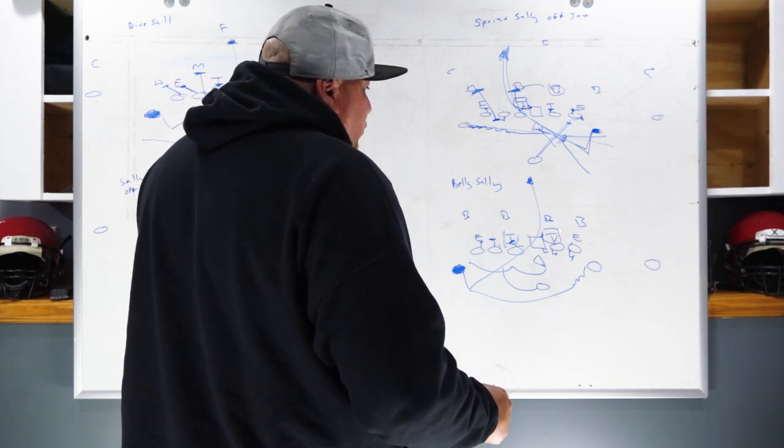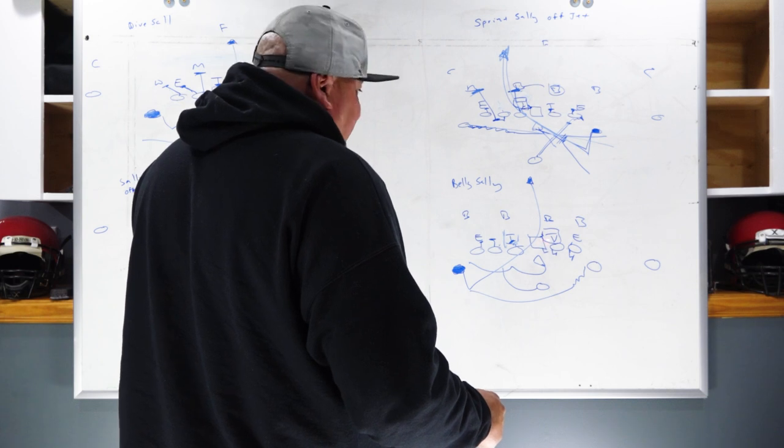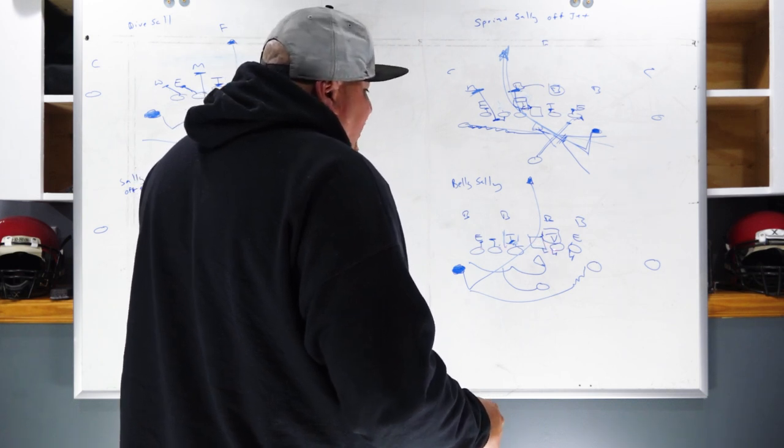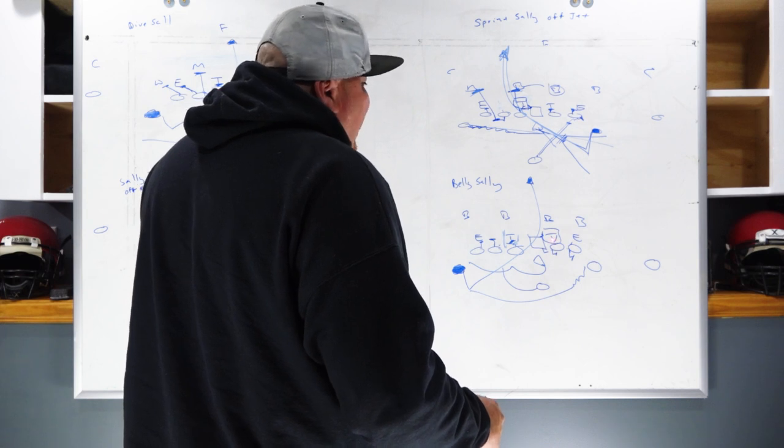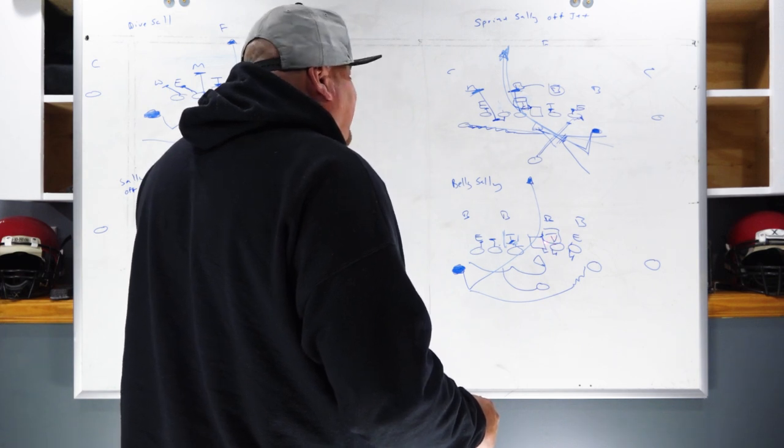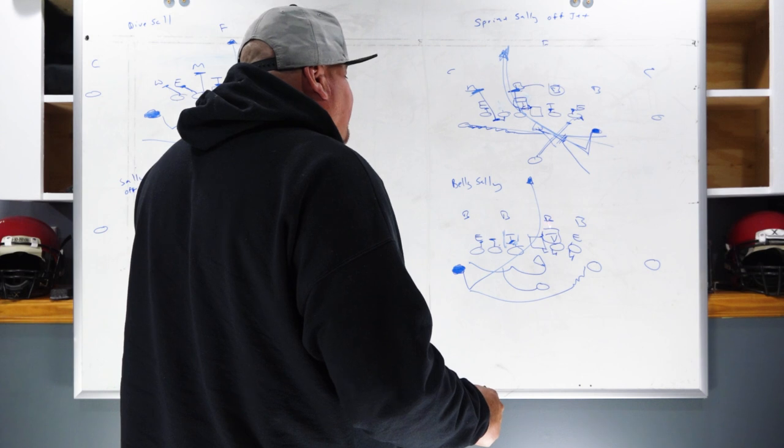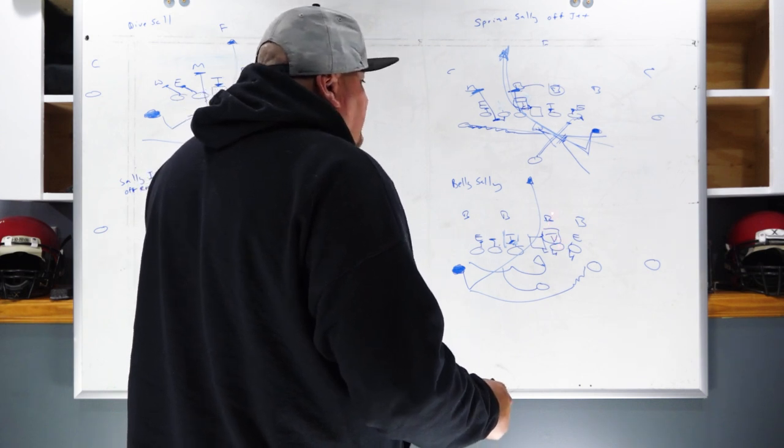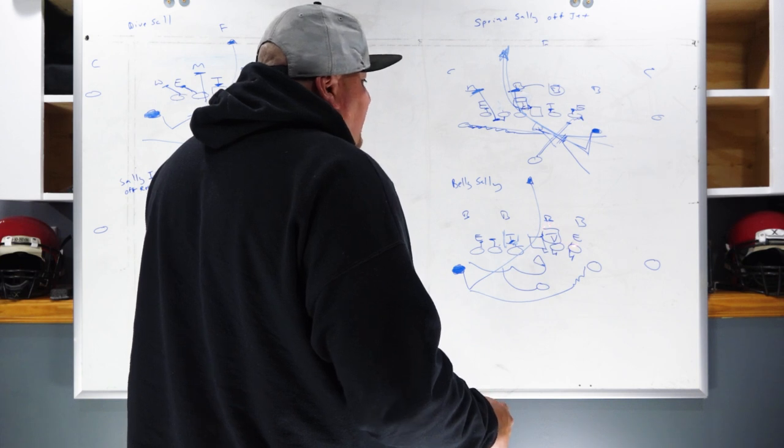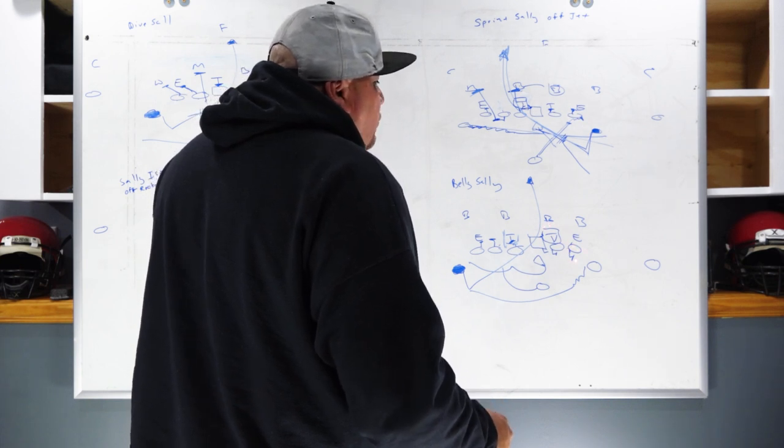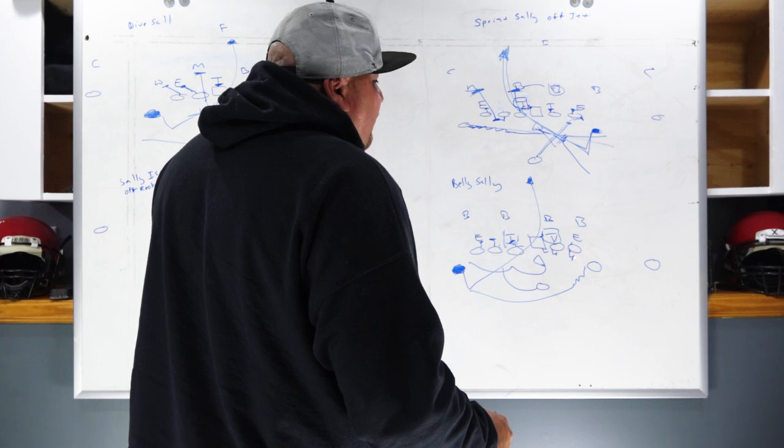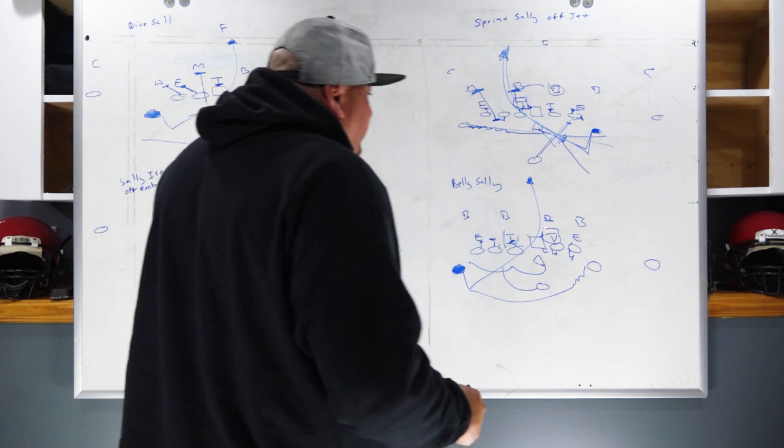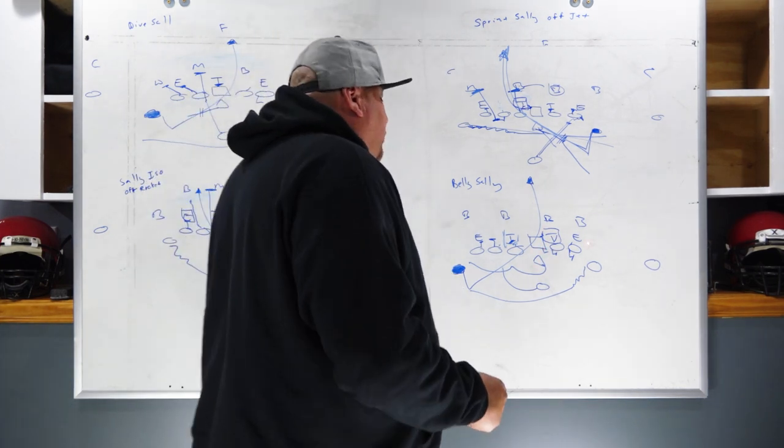The read will be the one technique tackle because the strength is over here with the tight end. The center and guard will read the reaction of this one technique. If he spikes into the A gap, center take him, guard climb. If he tries to spike outside, the guard takes him, center climbs. So now we're taking care of it on the backside. Backside tackle is going to pass set this guy, bring him up the field, lock on, turn him out. We're aiming for the center's butt. We're hoping for an overreaction of the defense.